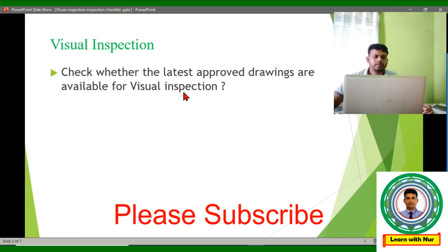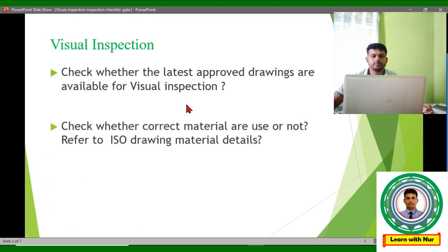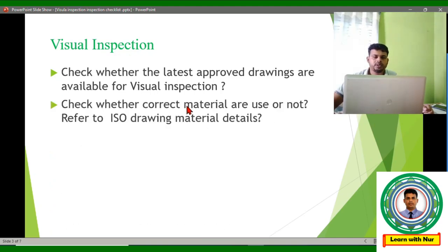During visual inspection, we have to check that the latest approved drawing is available. We need to verify this drawing is the latest version before proceeding. Then we have to check that the correct material has been used — during fitup we already confirmed this, but during visual inspection we cross-check again whether the material used matches what is mentioned in the ISO drawing.